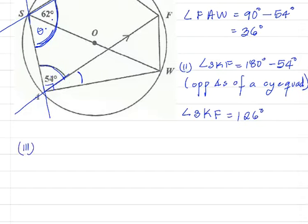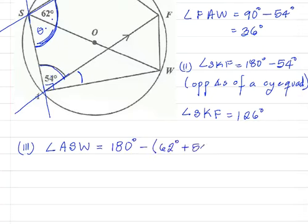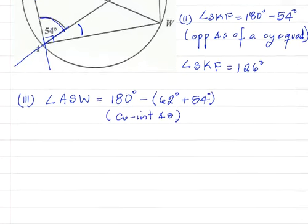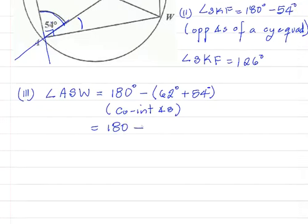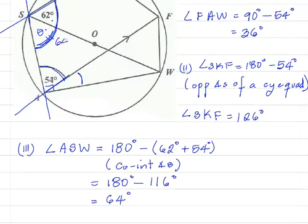So angle ASW would be equal to 180 minus 62 plus 54, which is 180 minus 116. The reason is that they are co-interior angles from parallel lines cut by a transversal. This gives us 64 degrees, so angle ASW is 64 degrees — this angle here is 64 degrees.